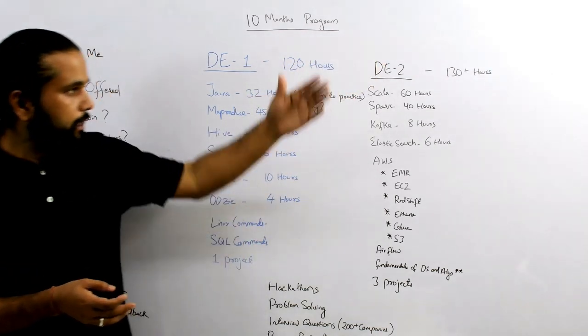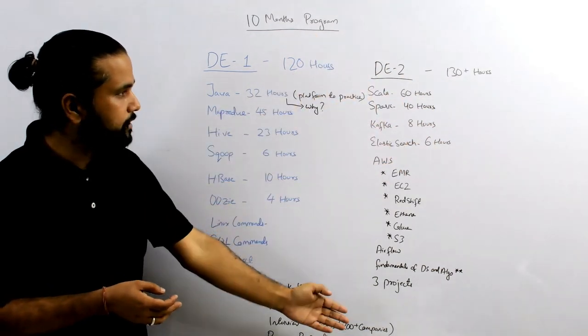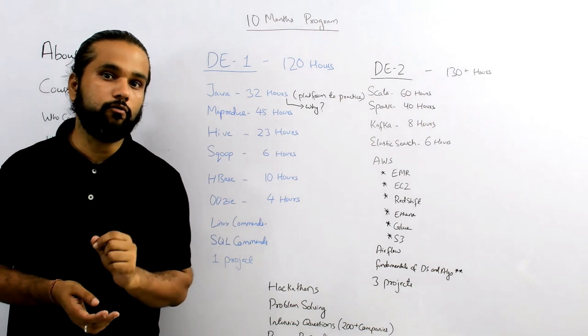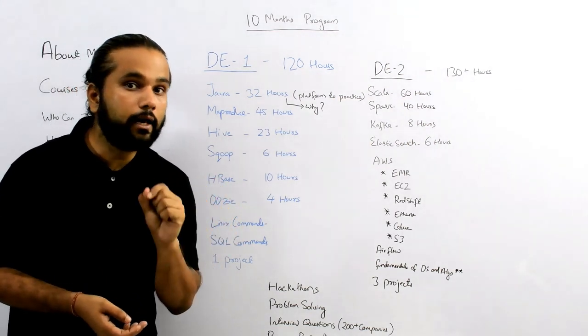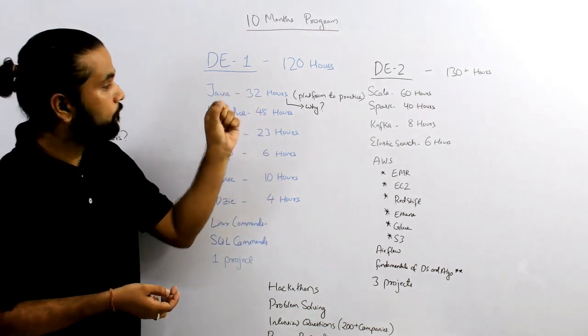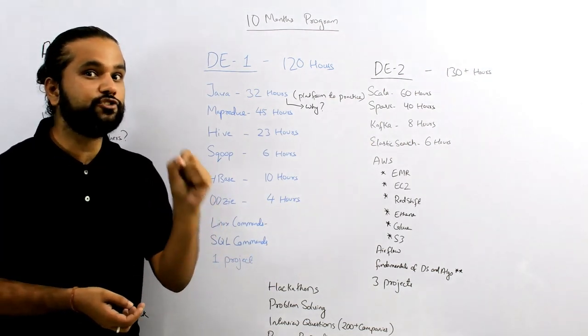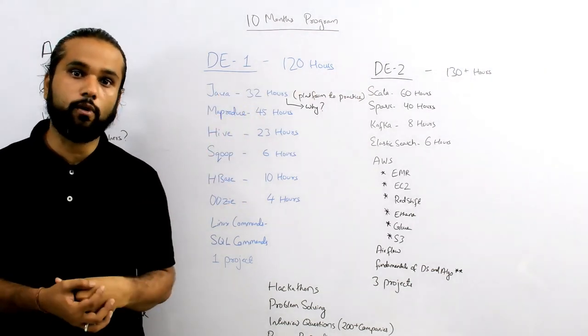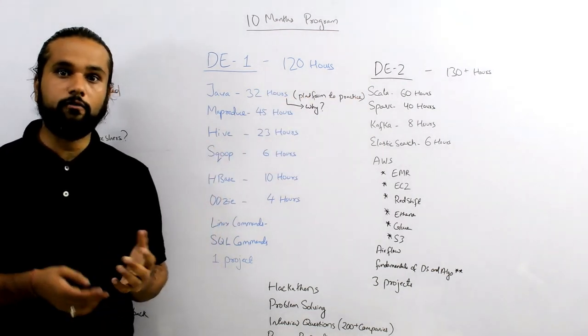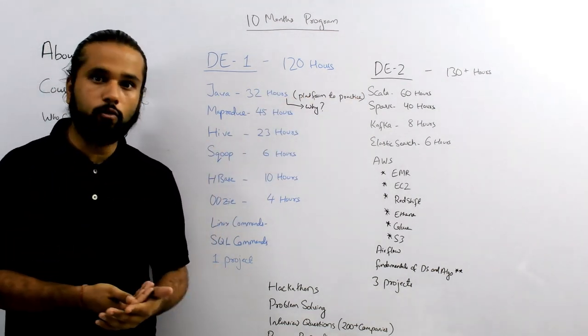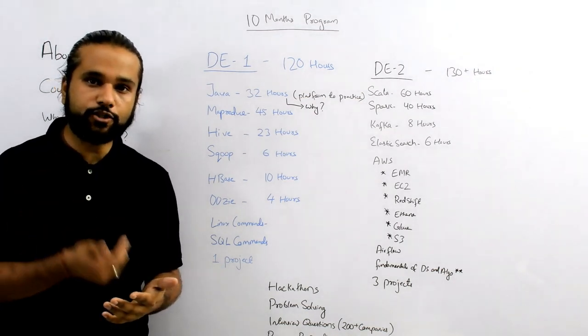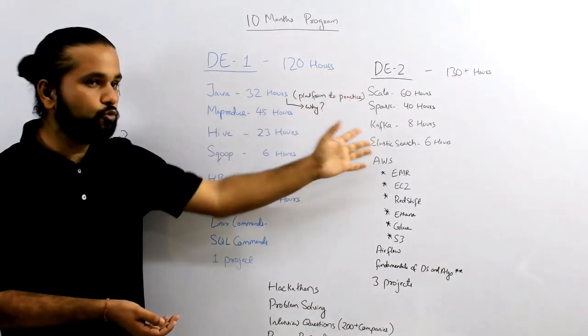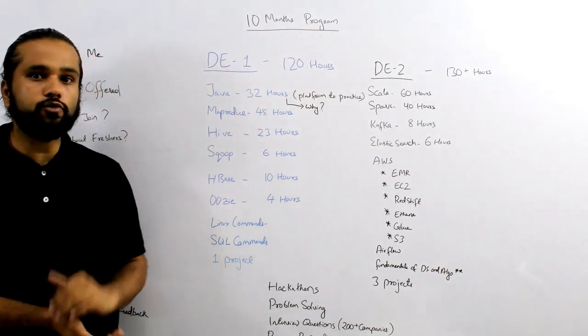Now let's talk about DE2. The DE2 course is 130 hours and covers everything in detail. We have Spark, Scala, Kafka, and Elasticsearch as main components. Scala we'll learn for 60 hours, and trust me, Scala is very important. You cannot learn Scala in just a week. After this, we'll move to Spark where we'll cover Spark Core in detail, Spark SQL dataframes, Spark streaming, and Spark GraphX. We will not cover Spark ML in this program.